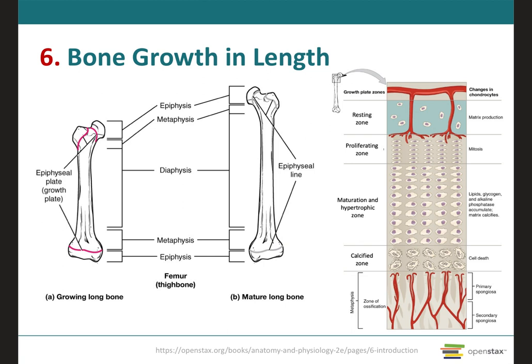In a bone fracture, damage to the epiphyseal plate means the fractured bone may be shorter than normal once adult stature is reached. This is because damage to the cartilage, which is avascular, will accelerate the closure of the epiphyseal plate due to the cessation of cartilage cell division, thus inhibiting the lengthwise growth of the bone.